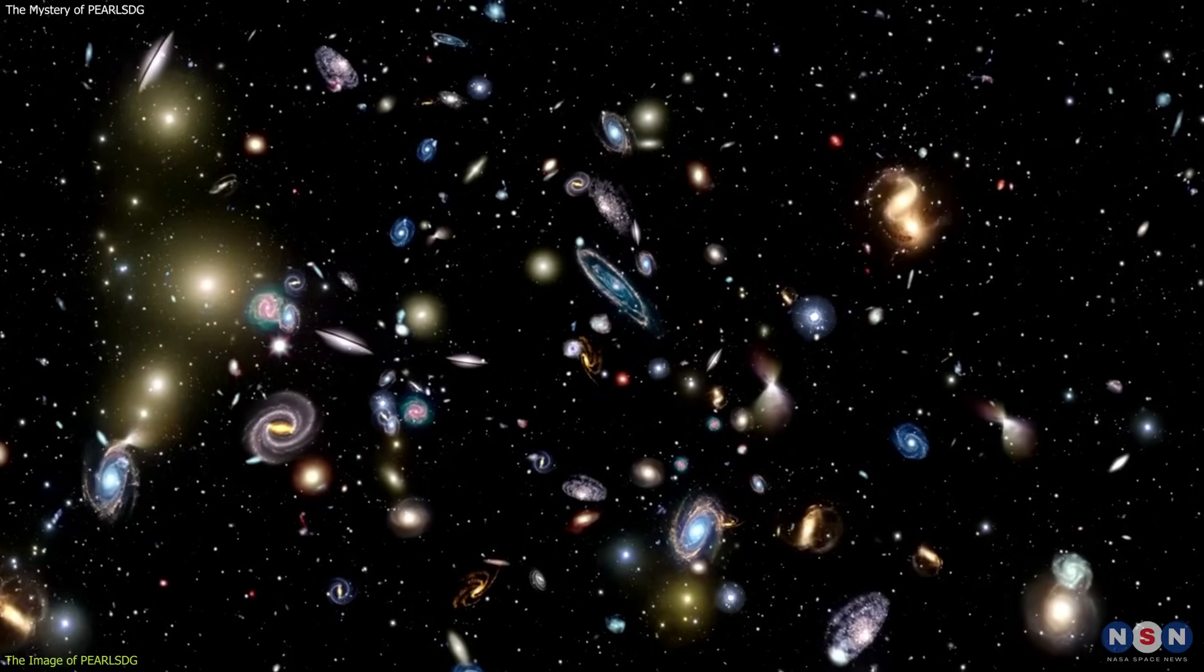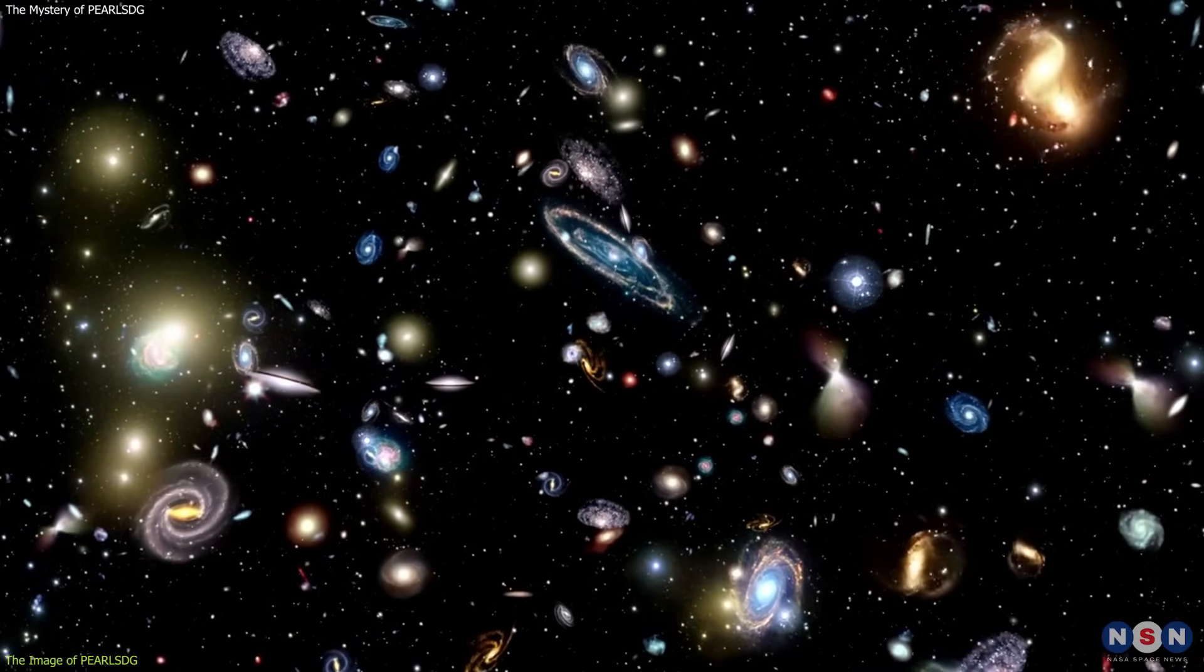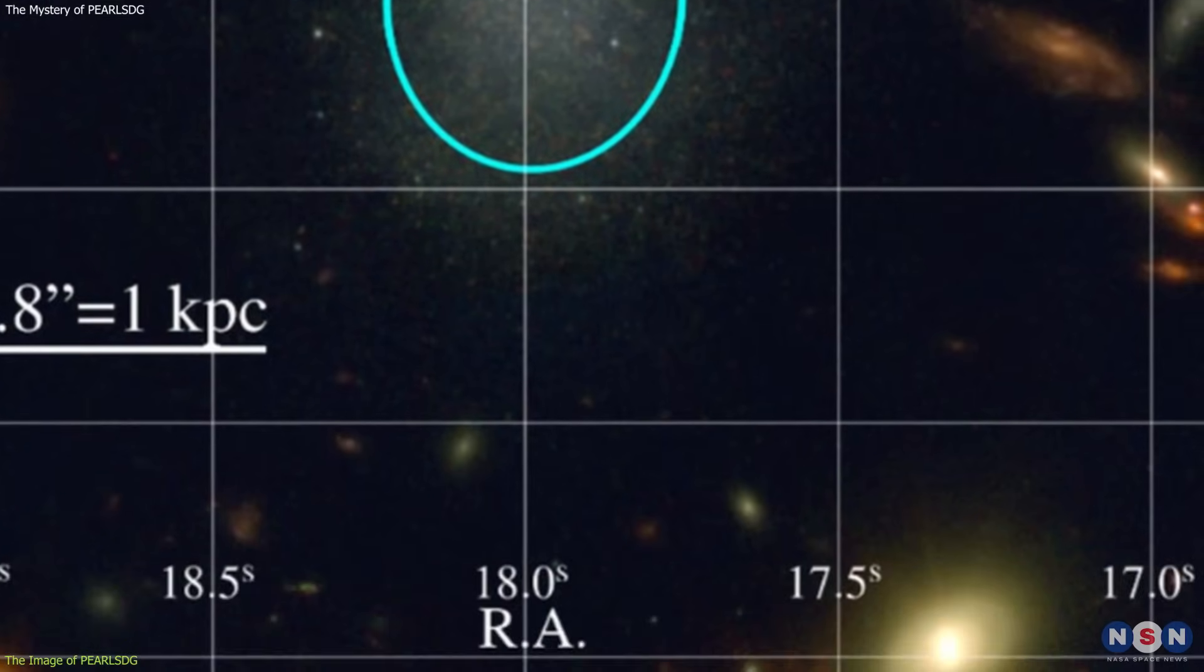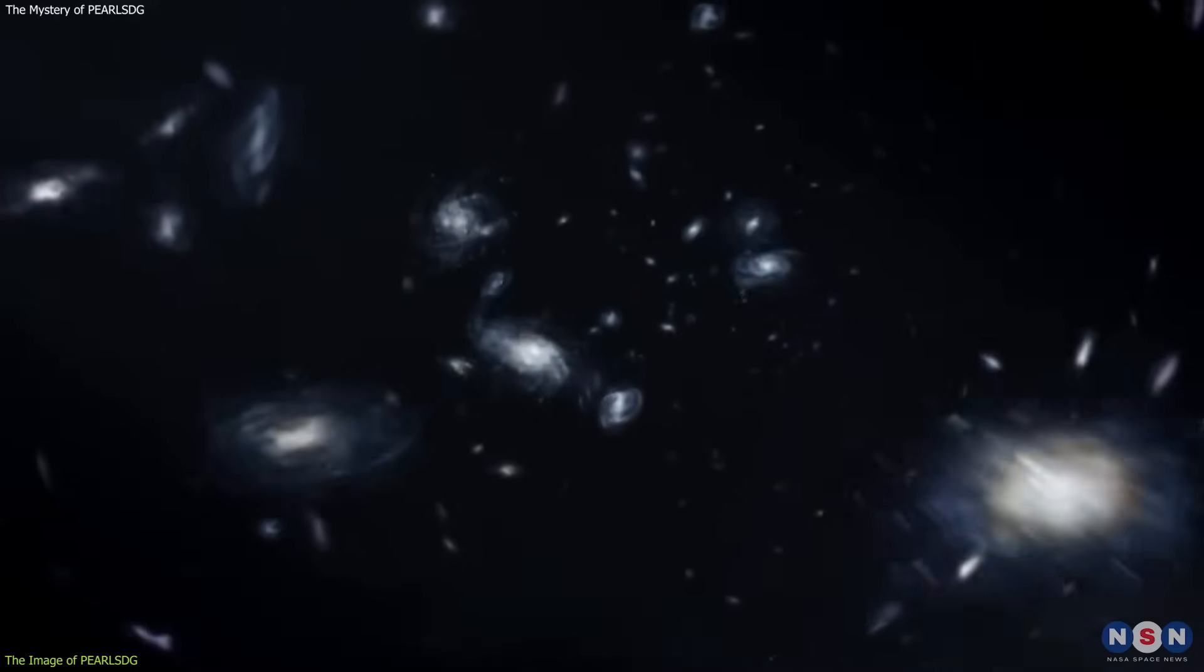They also have a more regular and symmetric shape, which indicates their more evolved and stable structure. The contrast between PEARLS DG and the other galaxies is striking, and it shows how different and diverse the galaxies in the universe are.